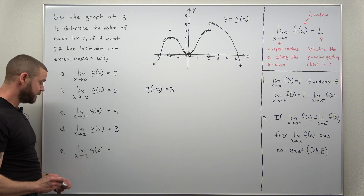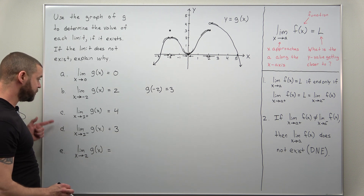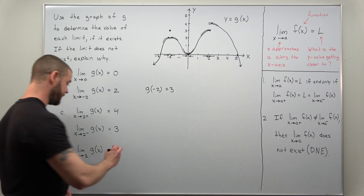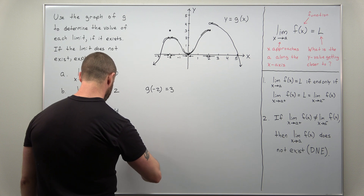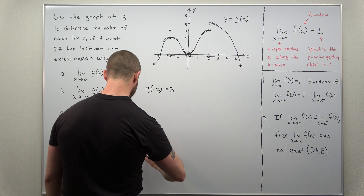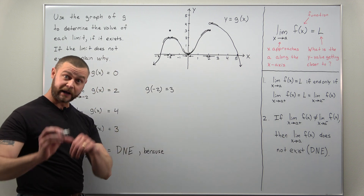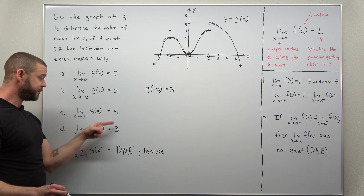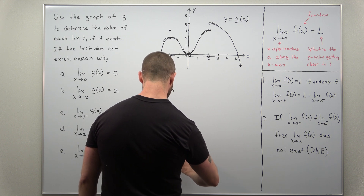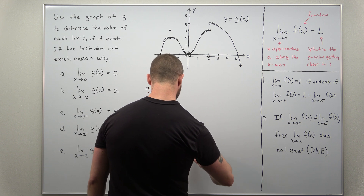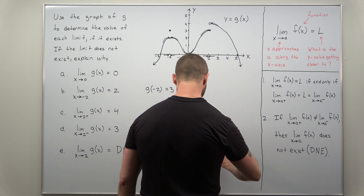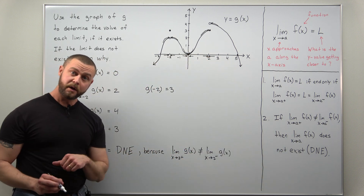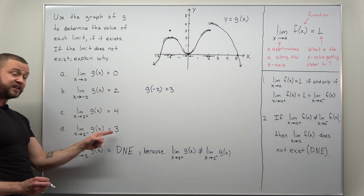For part E, the two-sided limit as X approaches two: notice from parts C and D that the right and left-side limits both exist but are different — four versus three. We can immediately conclude this two-sided limit does not exist, written DNE. You should always justify this: the reason is that the limit as X approaches two from the right does not equal the limit as X approaches two from the left.